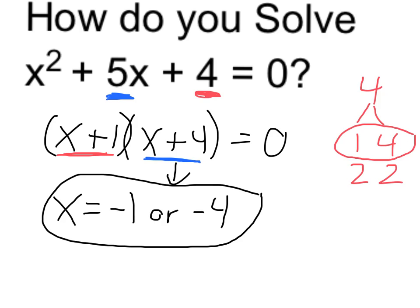And either of them, if I plug into the original equation, will be true. For example, negative 1 squared is positive 1, plus 5 times negative 1 is minus 5. So 1 minus 5 is negative 4, plus 4 equals 0.